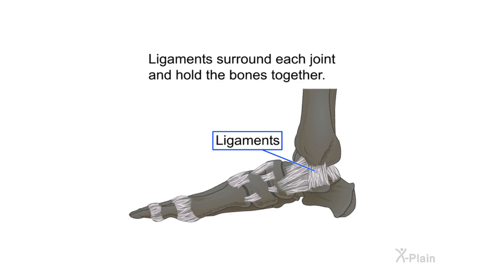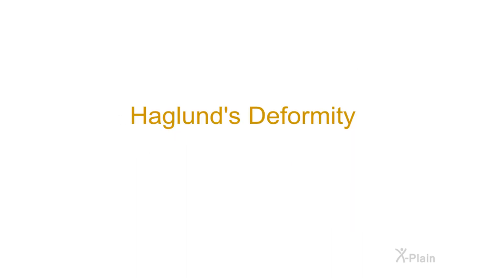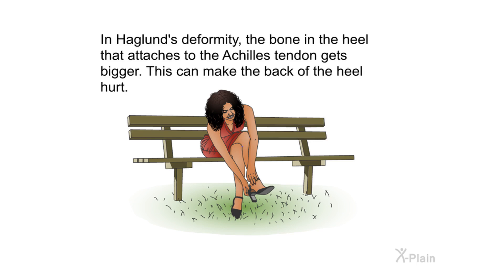The Achilles tendon connects your calf muscles to your heel bone. In Haglund's deformity, the bone in the heel that attaches to the Achilles tendon gets bigger. This can make the back of the heel hurt.